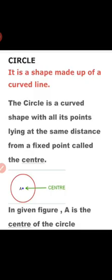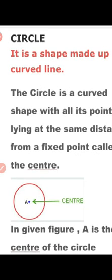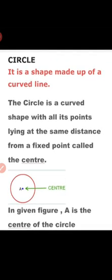Our next topic is Circle. What is a circle? It is a shape made up of a curved line. A circle is a curved shape with all its points lying at the same distance from a fixed point called the center. In the given figure, point A is the center of the circle.